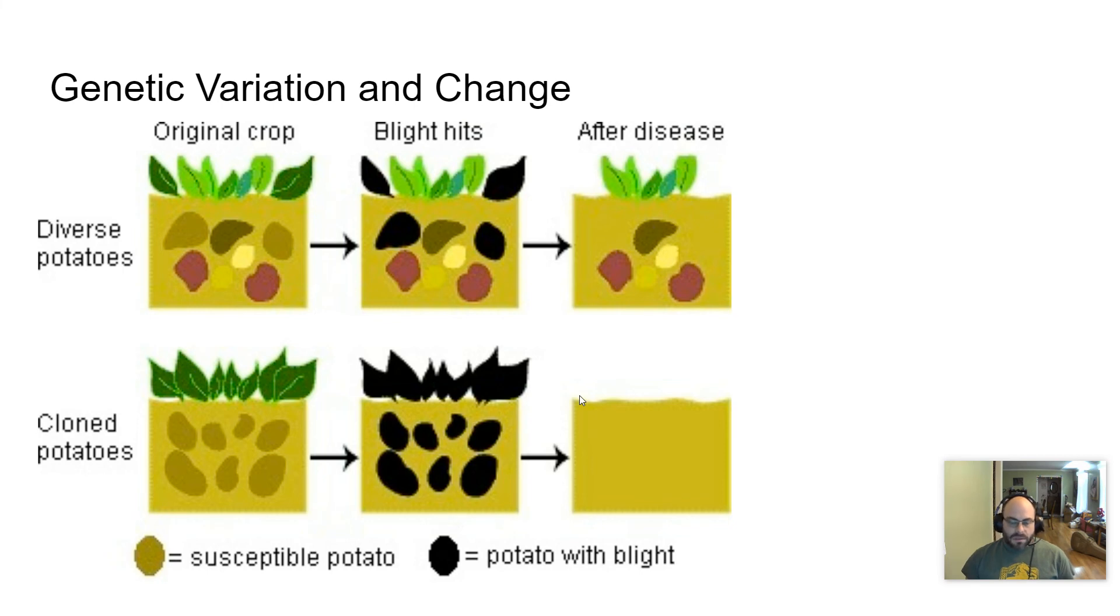A great example of this is the potato famine in Ireland. In Ireland, potatoes were a major food source and they farmed potatoes, but did not farm a diversity of potatoes. When a blight hit, which is a disease that affects potatoes, it killed all of them. Not just one particular variation. It killed all of them because there was no variation.